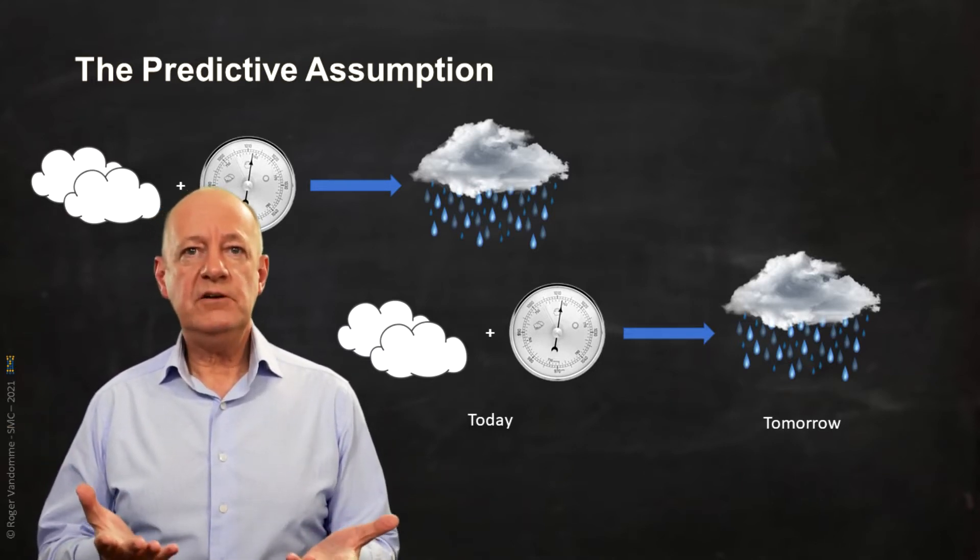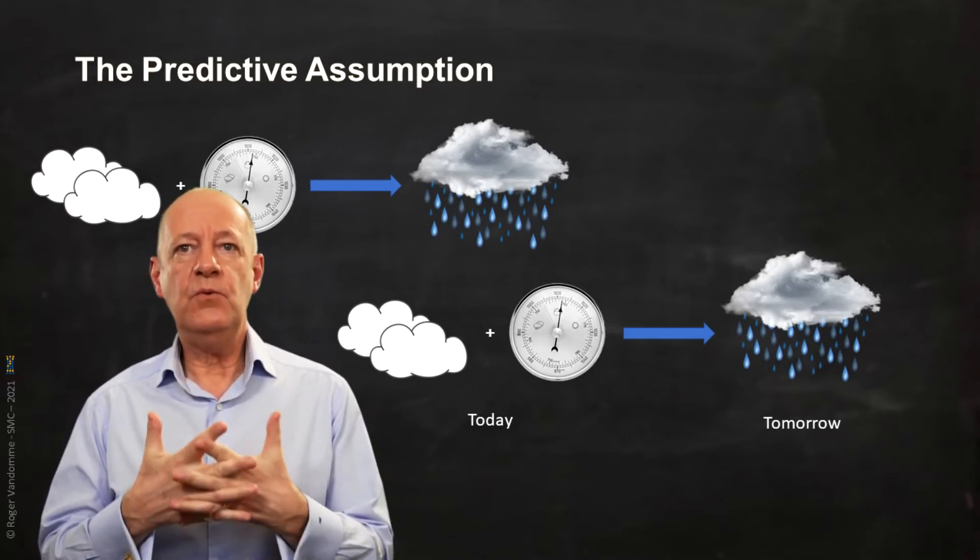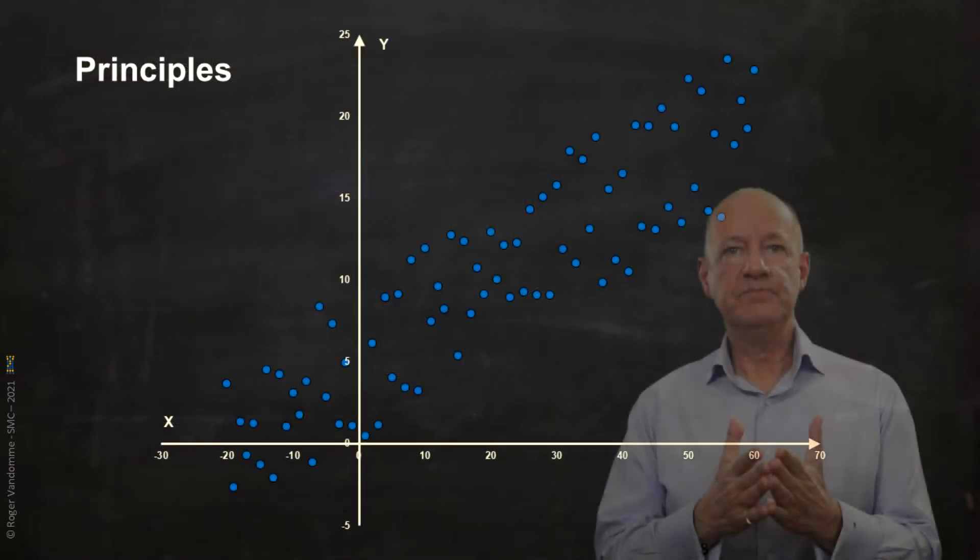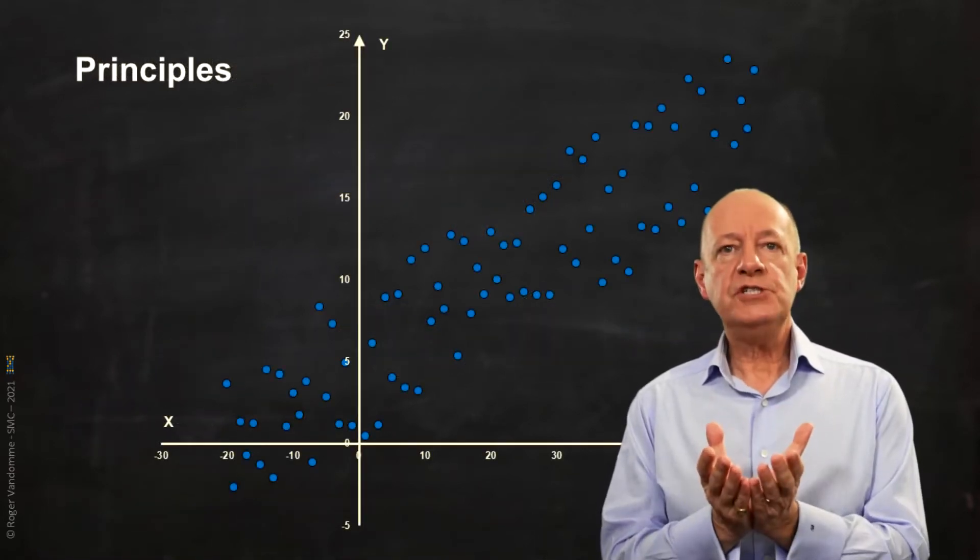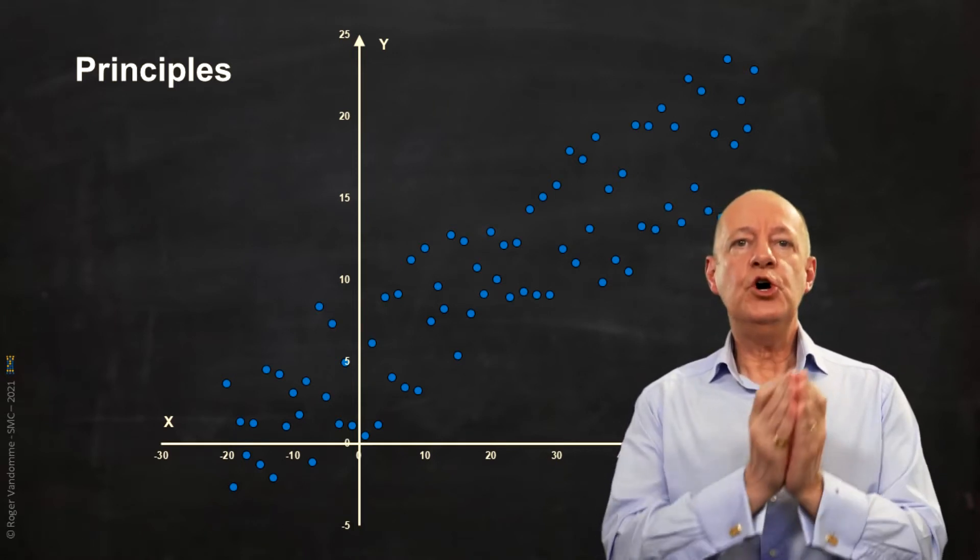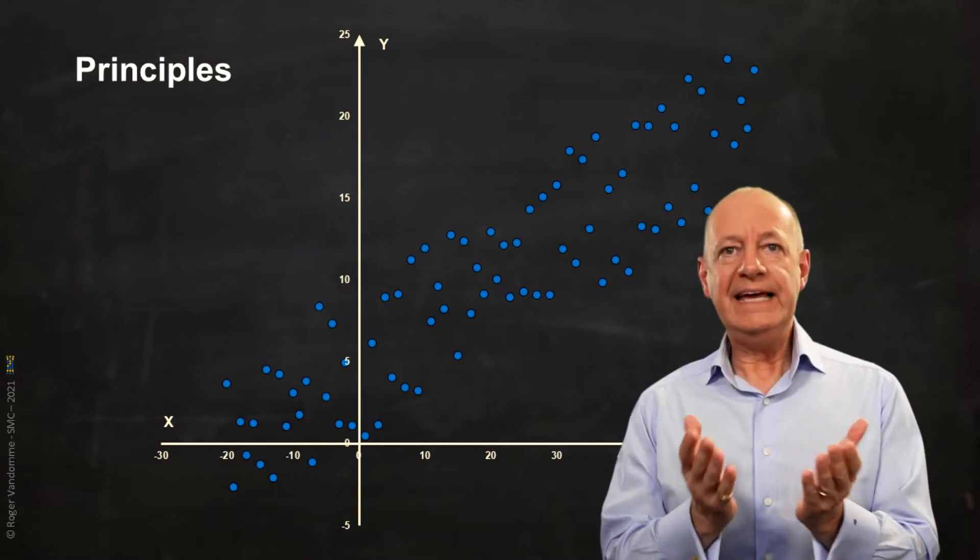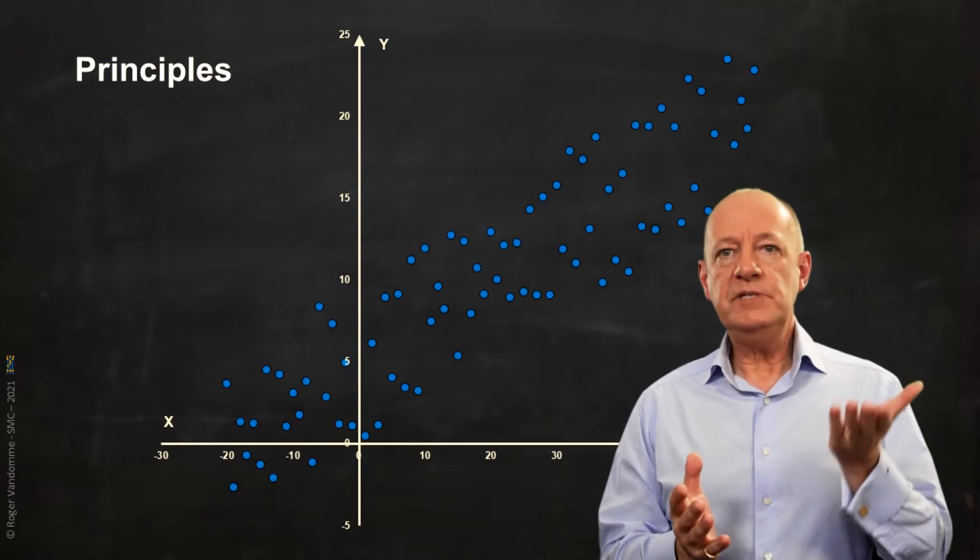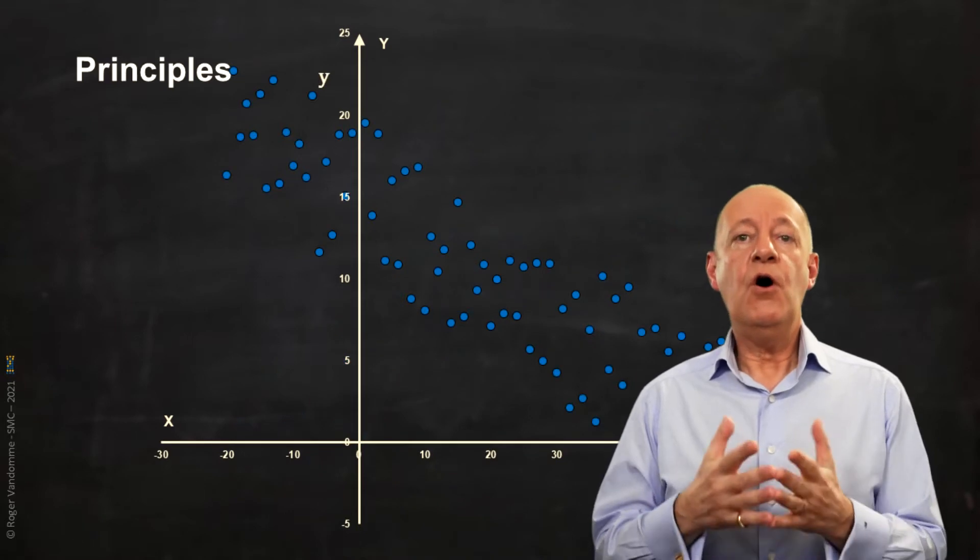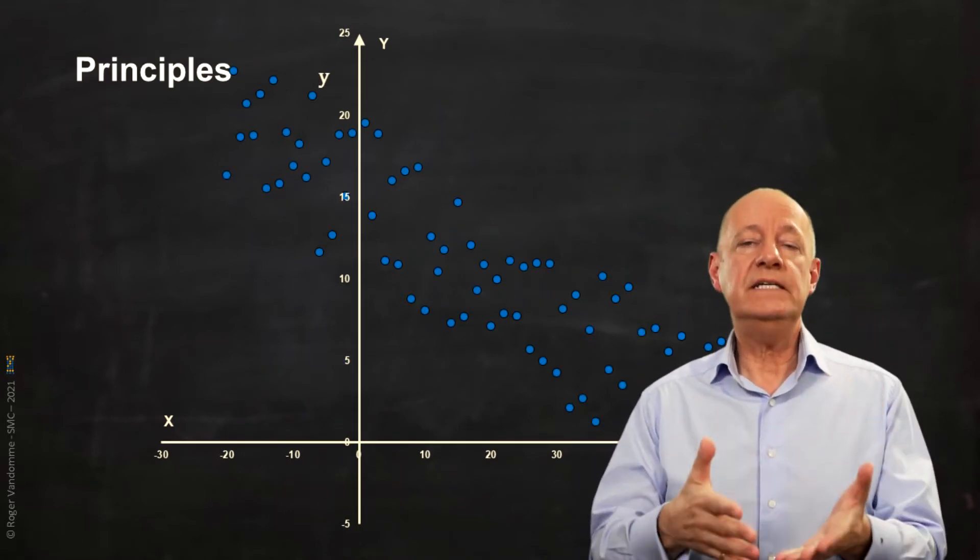Philosophers will tell us it's not true. We can however observe it mathematically with the following two principles. First, the correlation, which is the observation of the dependence between two variables. There is a correlation when two variables evolve together. If one increases, the other also increases, and it is a positive correlation. Or if one increases, the other decreases, and it is a negative correlation.